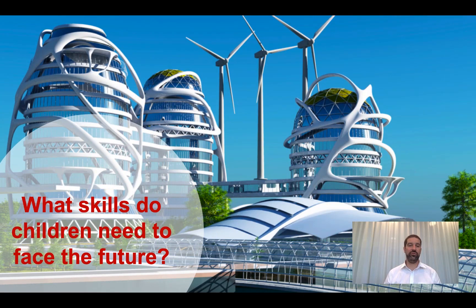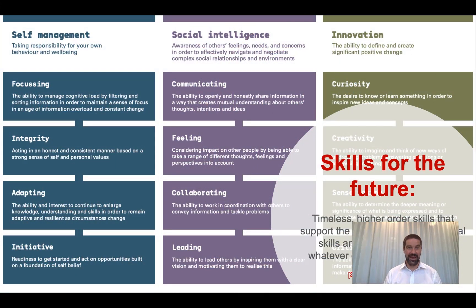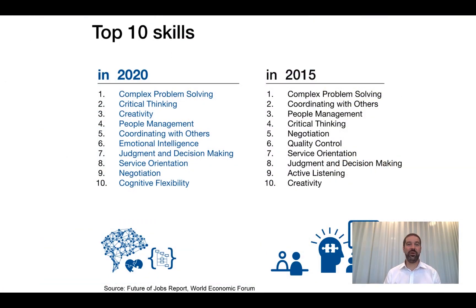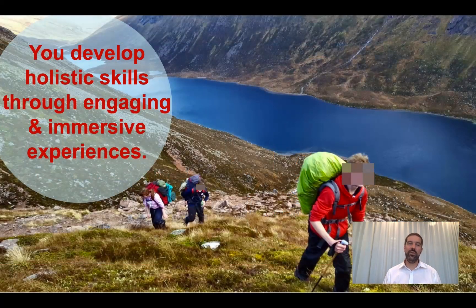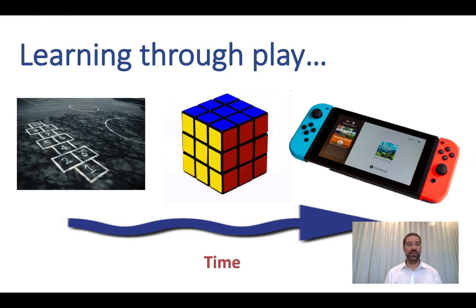When we think about different skills and which skills are important, there are lots of people with their own opinions. One framework we use a lot is called Skills 4.0, Skills for the Future. The World Economic Forum talks a lot about skills — skills important in 2015, and skills that might be more important in 2020 based on their future of jobs report. Within the Lego Foundation, we talk about skills for holistic development: physical, social, creative, emotional, and cognitive skills. Nobody is arguing that skills are not important, and we develop skills through engaging and immersive experiences, which are really good learning and teaching approaches. Learning through play and playful learning approaches are a really good way to develop a whole range of holistic skills.